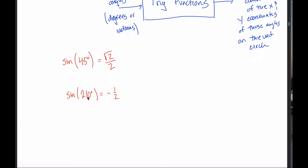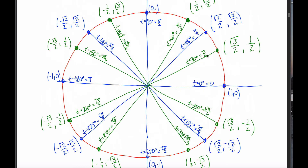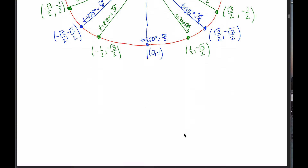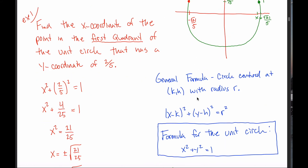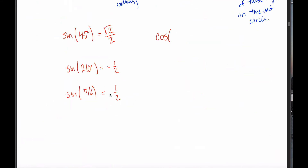That angle doesn't have to be given in degrees. Somebody could just as easily ask you for the sine of pi over 6. Then you come back to the unit circle, think pi over 6 is talking about this point, its y-coordinate is one half. Thus, the sine of pi over 6 is just one half. That's sine.